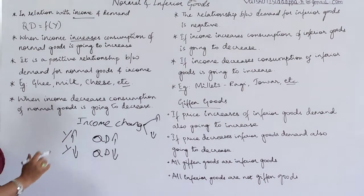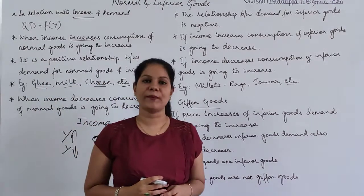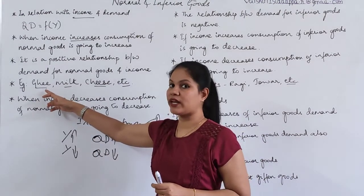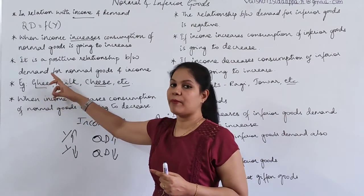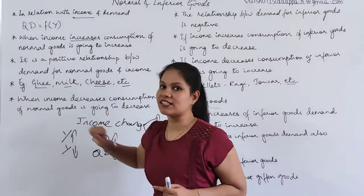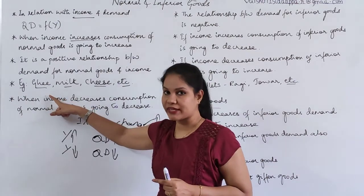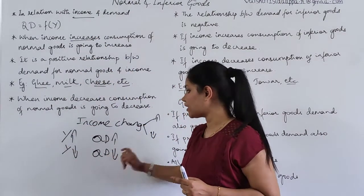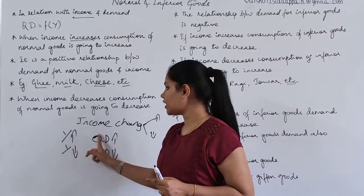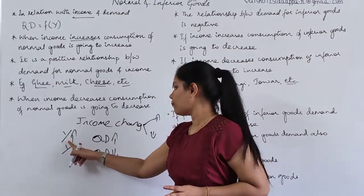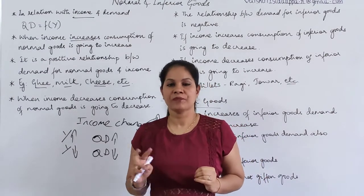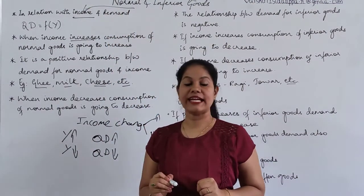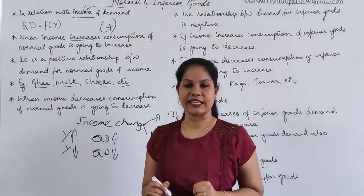Examples of normal goods include ghee, milk, and cheese. If your income increases, instead of buying half a kg of ghee you might buy 1 kg of ghee, because your income increased and you want to satisfy yourself with extra quantity. If your income decreases, instead of buying 1 kg you will buy half a kg. So for these goods, when income increases quantity demand increases, and when income decreases quantity demand decreases — a positive relationship.